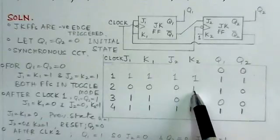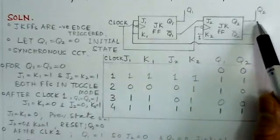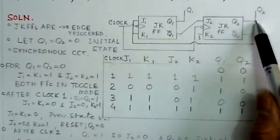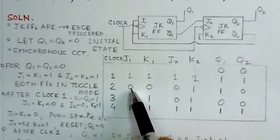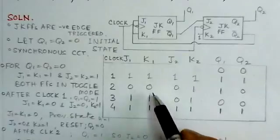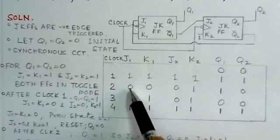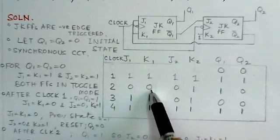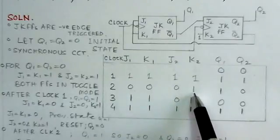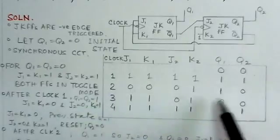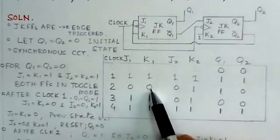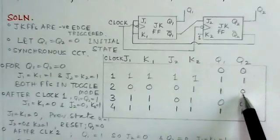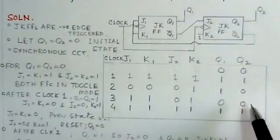For the J1, K1 flip-flop, when Q2 was 1, Q2-bar is 0, so J1=0 and K1=0. This means the first flip-flop is in the previous-state (hold) mode — neither set nor reset is active. Meanwhile, the second flip-flop is in reset mode. So after the second clock pulse, the first flip-flop remains in its previous state.